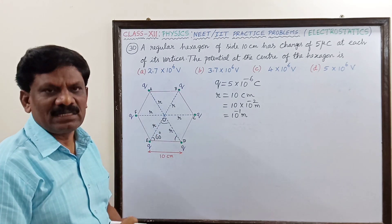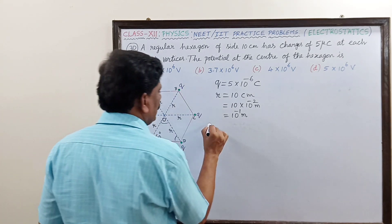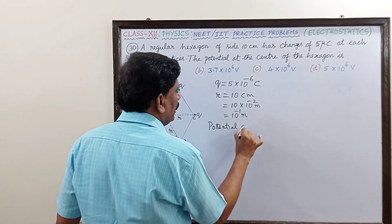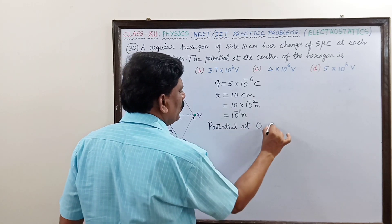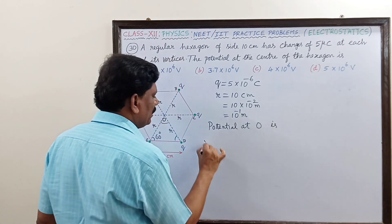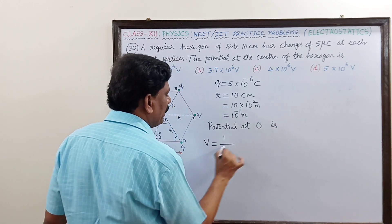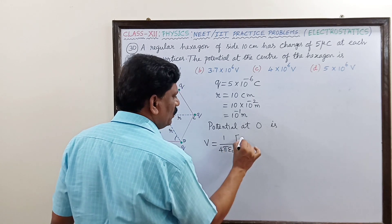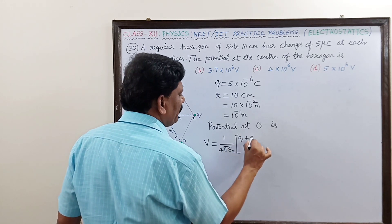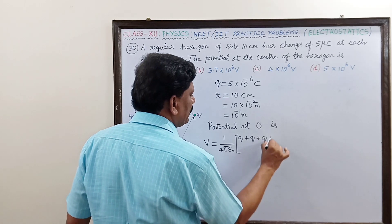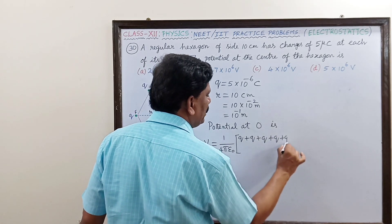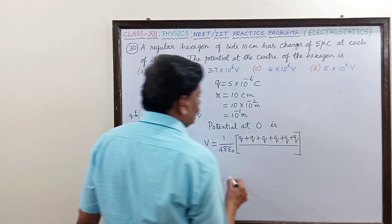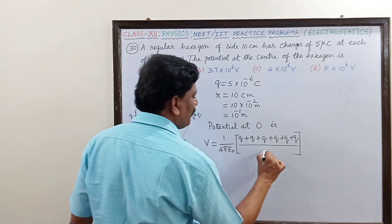So the potential at the center point O is given by V equal to 1 by 4 pi epsilon naught into the sum of the charges. So there are six charges, each of Q coulomb, and all are at the same distance. Therefore I can take r as the common denominator.